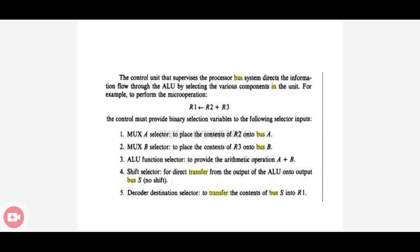The ALU arithmetic add operation is performed. The ALU function selector control signal is enabled to provide the arithmetic operation A plus B. Next, the shift selector — there is no shift operation here, so it directly transfers the output of the ALU to the S-bus. Finally, the decoder destination selector transfers the contents of S-bus into R1. These are all about bus organization — the processor unit with ALU and buses.